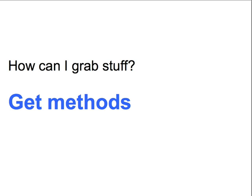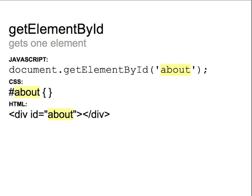One way is to use get methods of node objects. First, there's getElementById, which takes the id of a particular element on the page — which should be unique — as a string argument and returns a reference to the node corresponding to the element with that id. So, you could do document.getElementById and pass in the string 'about', and that would be equivalent to selecting an element by id in CSS.